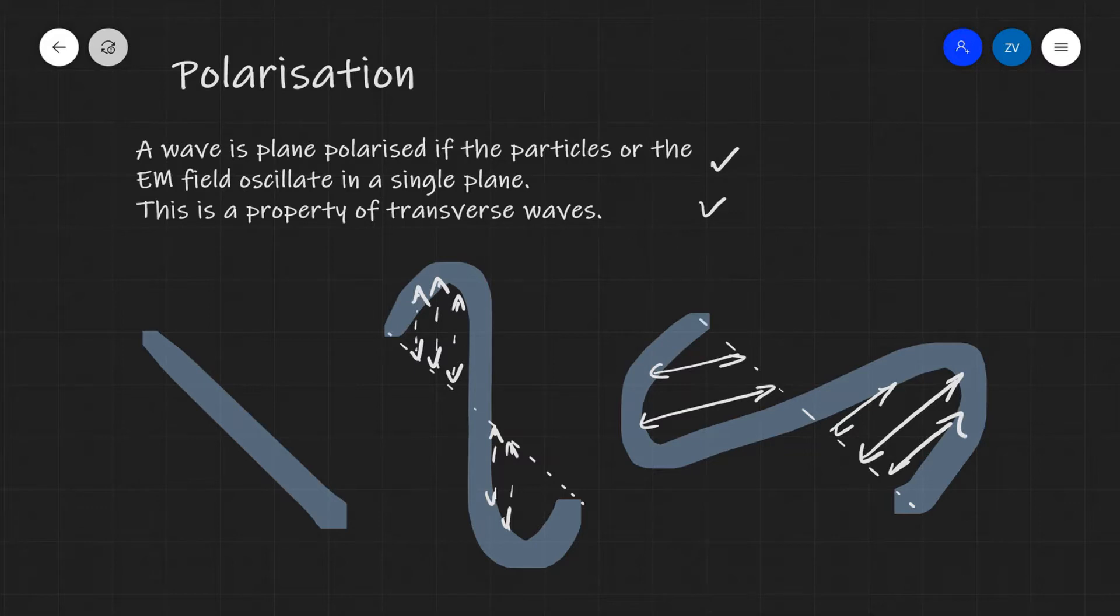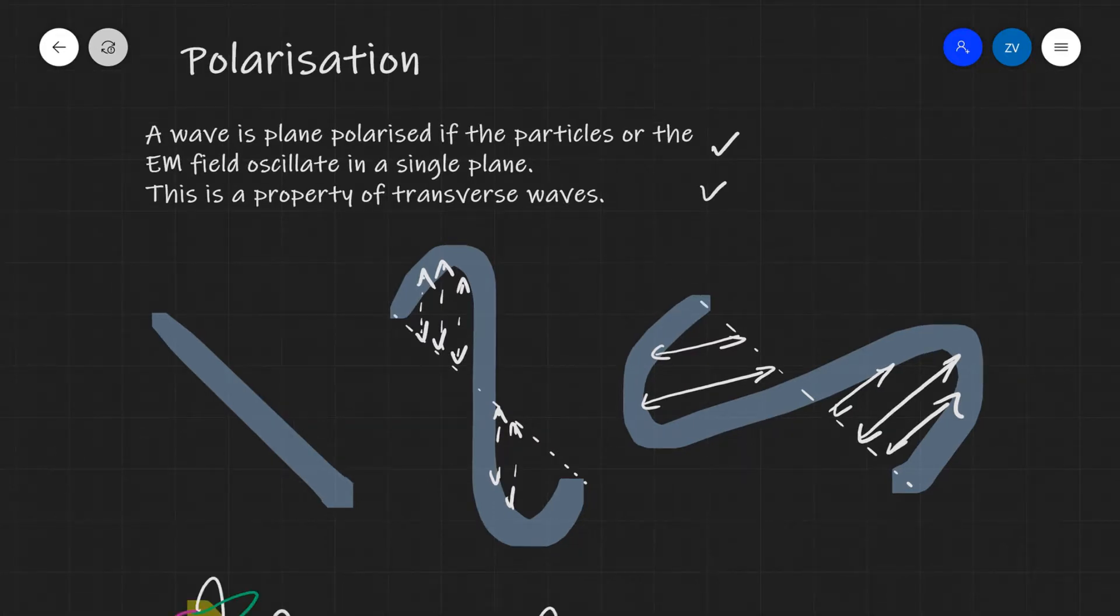And a wave is said to be plane polarized if the particles oscillate in a single plane. Let's have a look at a few conventions for denoting some different types of polarization.